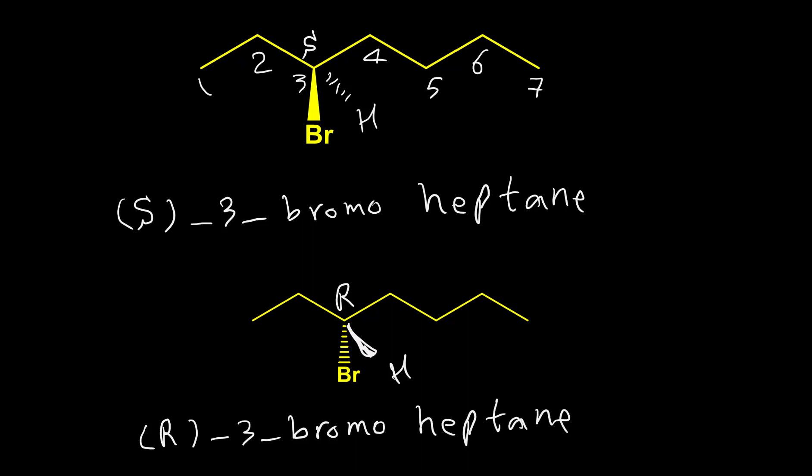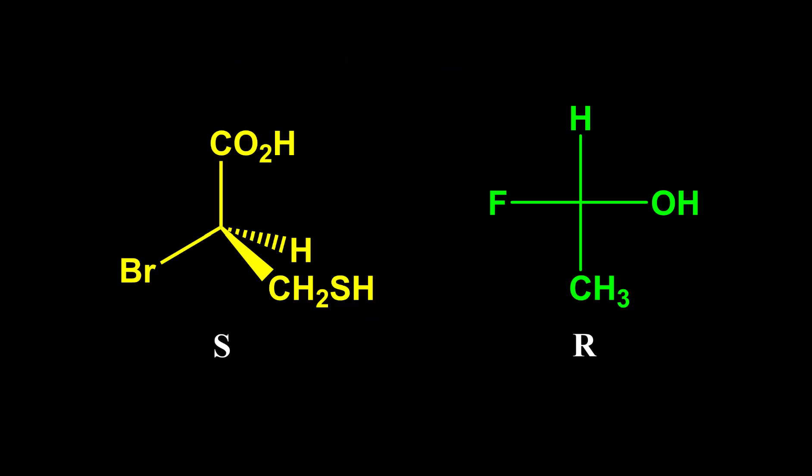So we use configuration to distinguish between enantiomers and other stereoisomers in IUPAC nomenclature as well. Thank you for watching this video. For more videos, please subscribe to our YouTube channel.